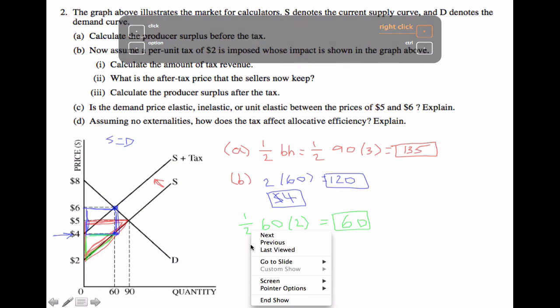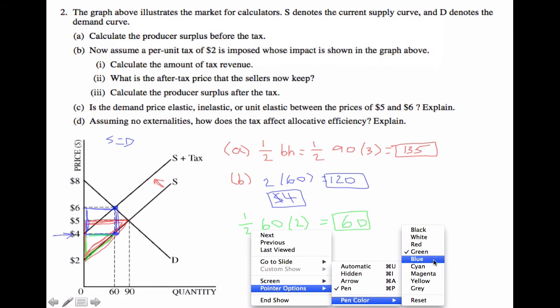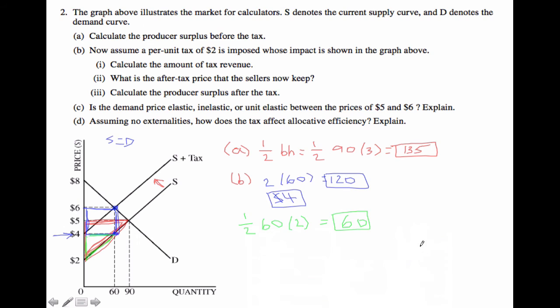Now let's look at part C, which is asking us about if the demand is price elastic, inelastic, or unit elastic between the prices of 5 and 6. So the best way to solve this question is to think about the change in total revenue. We know that total revenue is price times quantity.